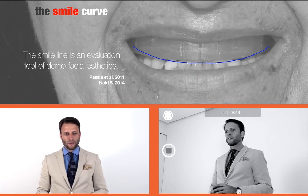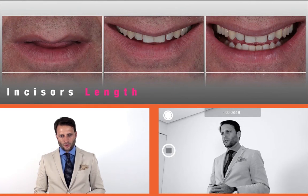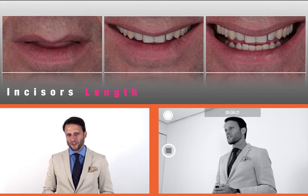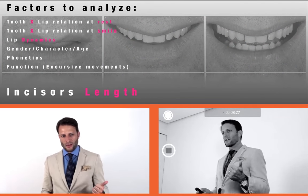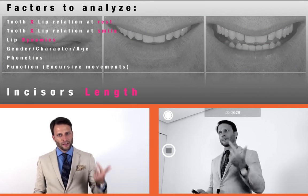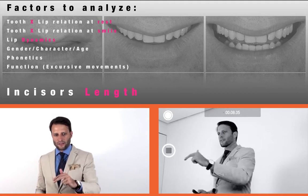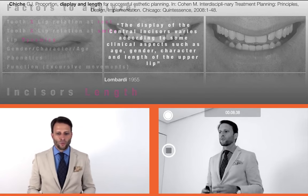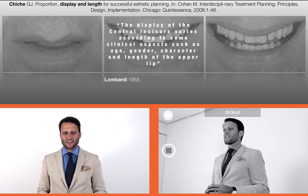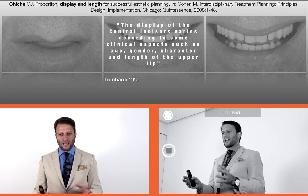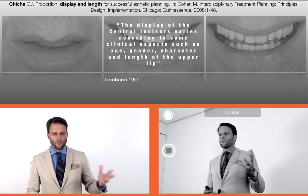The smile line is an evaluation tool of dental-facial aesthetics. The factors we need to consider to decide where we want this line to be: look at the patient at rest, look at the patient smiling, understand lip dynamics, gender, character, age, phonetics, and function — all these factors will interfere with this decision. The display of the central incisor varies according to clinical aspects such as age, gender, and character — again from Lombardi.